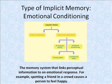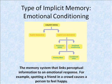The last type of implicit memory we will discuss is emotional conditioning. Emotional conditioning is the memory system that links perceptual information to an emotional response. For example, seeing a friend in a crowd of people causes a person to feel happy. Emotional conditioning may be affected by a priming effect, in which the repetition of a stimulus exaggerates the emotional response, and it can also be influenced by a conditioned reflex, such as jumping out of the way of a car as you cross the street.